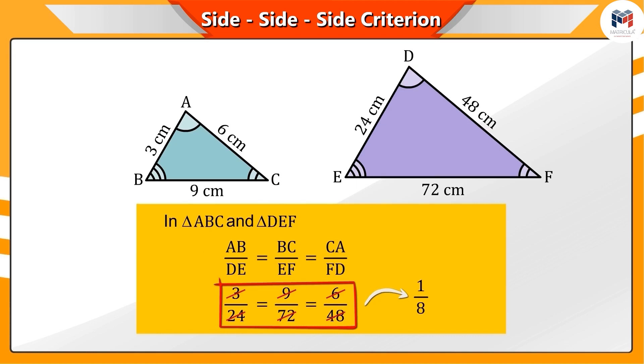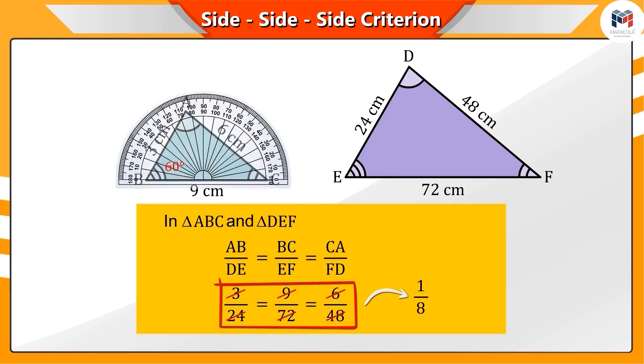You are absolutely correct. The ratios of the corresponding sides of both the triangles are 1 by 8. And if we talk about the angles, then